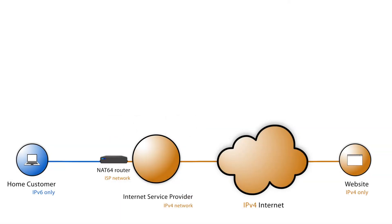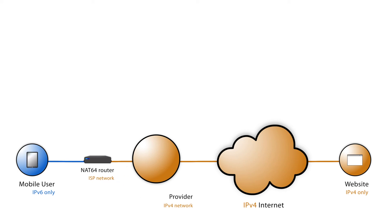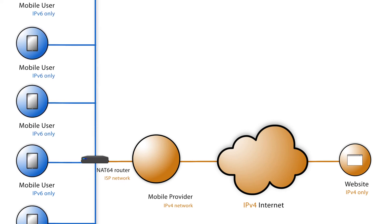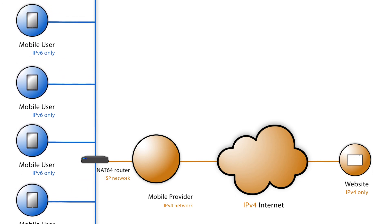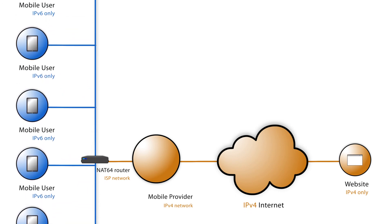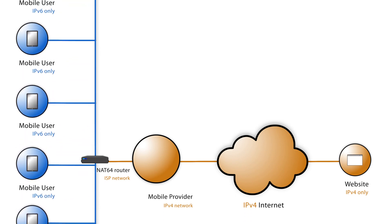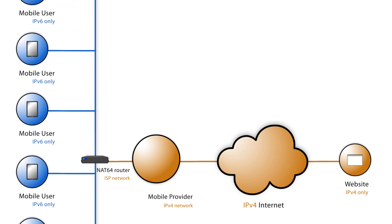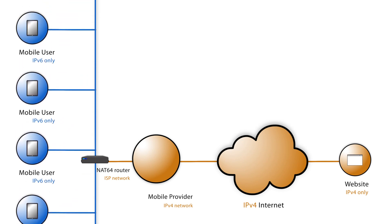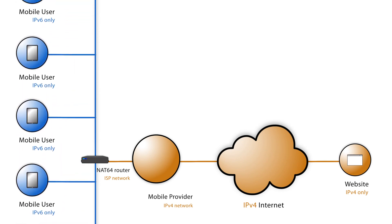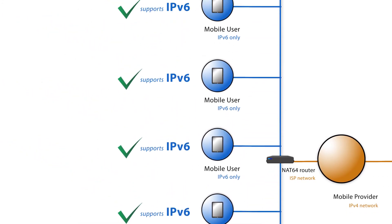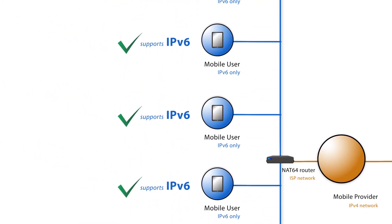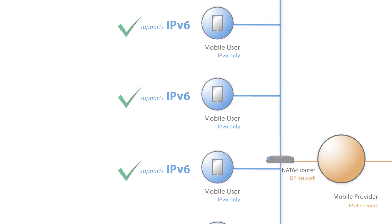NAT64 is a transition mechanism that can be useful for mobile providers due to the massive number of devices that require IP addresses and the shortage of IPv4. Using NAT64 allows the devices to use IPv6 only. Bear in mind that in this scenario, the mobile phone needs to support IPv6, and not all apps support IPv6 today.